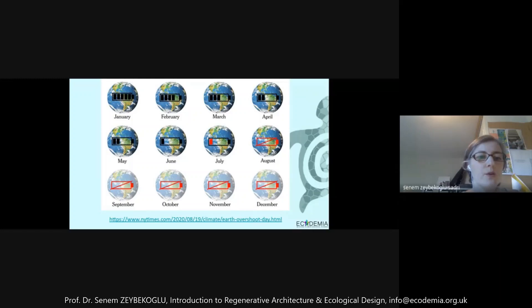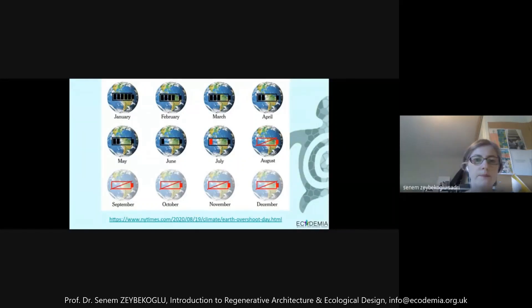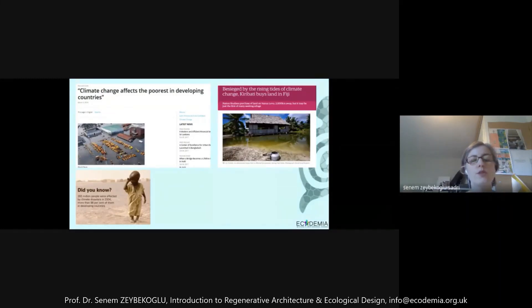We are running out of very precious resources on planet Earth. Unfortunately, with the increase in human population and unjust distribution of resources, poorer countries and people suffer from these conditions more severely. Climate change affects the poorest in developing countries, and even in more developed countries, the poorer population is being affected by crisis situations such as climate change, lack of food, or even the pandemic itself.